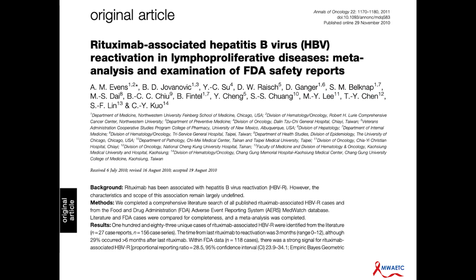The other high-stakes situation where HBV reactivation can occur is when you give rituximab, which is a favorite part of lymphoma treatment. It's a CD20 monoclonal antibody. When you disable B-cell lymphocyte activity in the way that rituximab does, you open the door to severe HBV reactivation. This has been reported to occur even in patients with isolated core antibody.